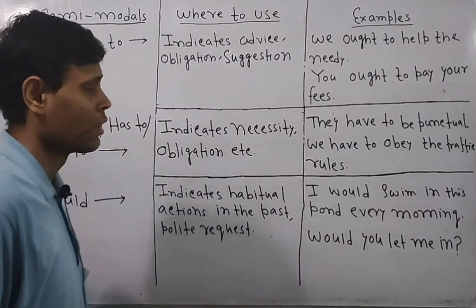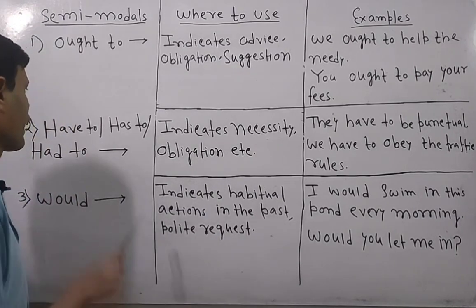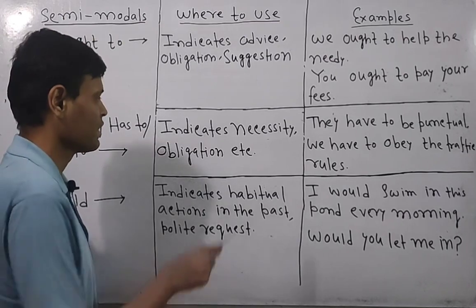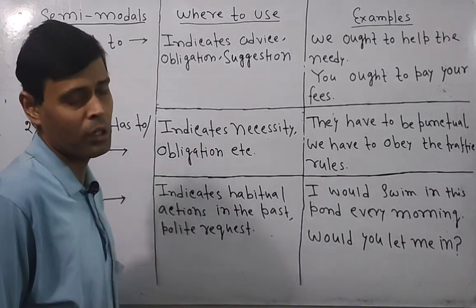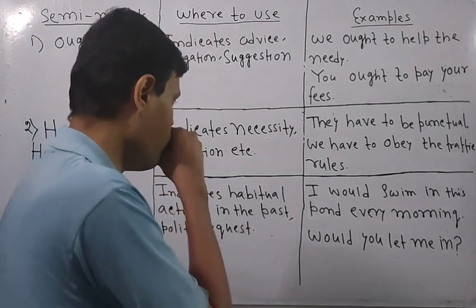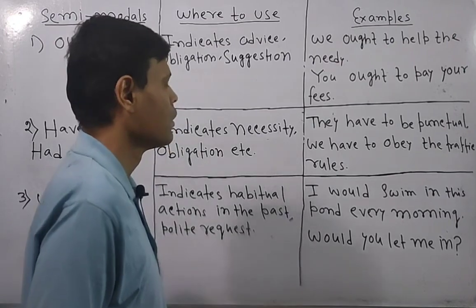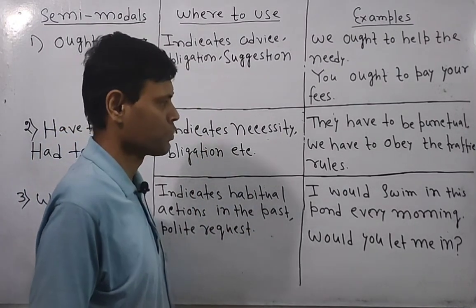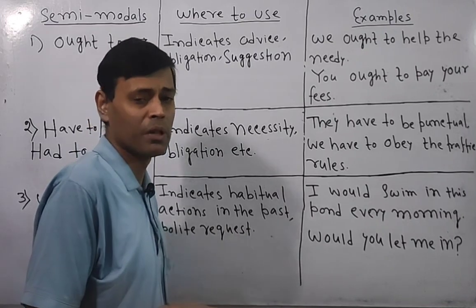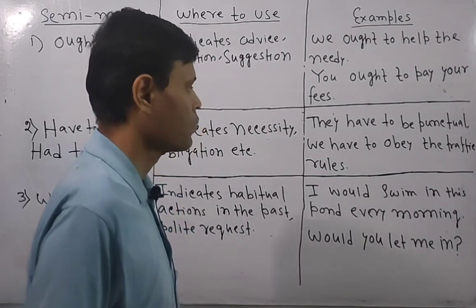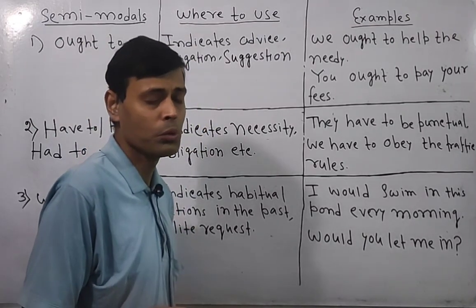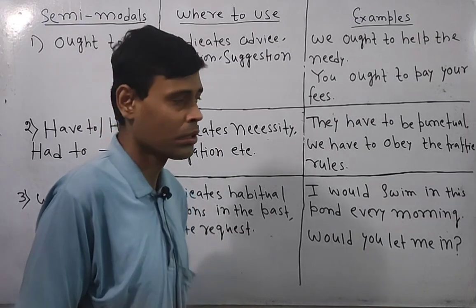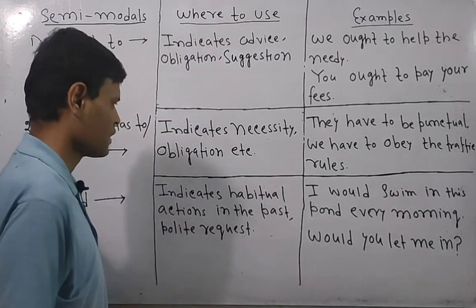The next semi-modals are 'have to,' 'has to,' and 'had to.' These modals are used while indicating necessity, obligation, etc. For example: 'They have to be punctual' or 'We have to obey the traffic rules' — all of these indicate some kind of obligation. We can also use 'had to' if it is in the past tense.